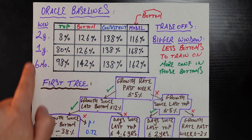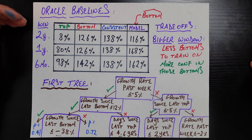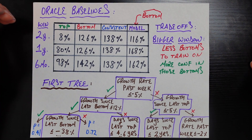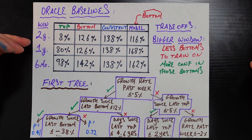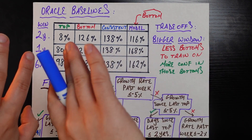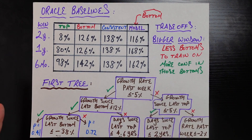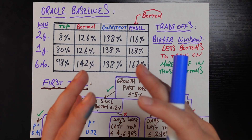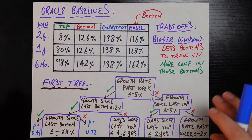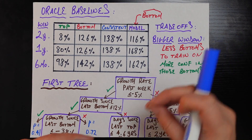All of the results are stored in this table. On the rows we have the window size used to decide what a market bottom and market top are. The first row means it's defined as a market bottom if, looking two years back and two years forward, this price was the lowest in that window. The lower row, six months, means we only need to look six months back and six months forward, and if that's the lowest price in that plus-or-minus six month window, that's considered a market bottom.